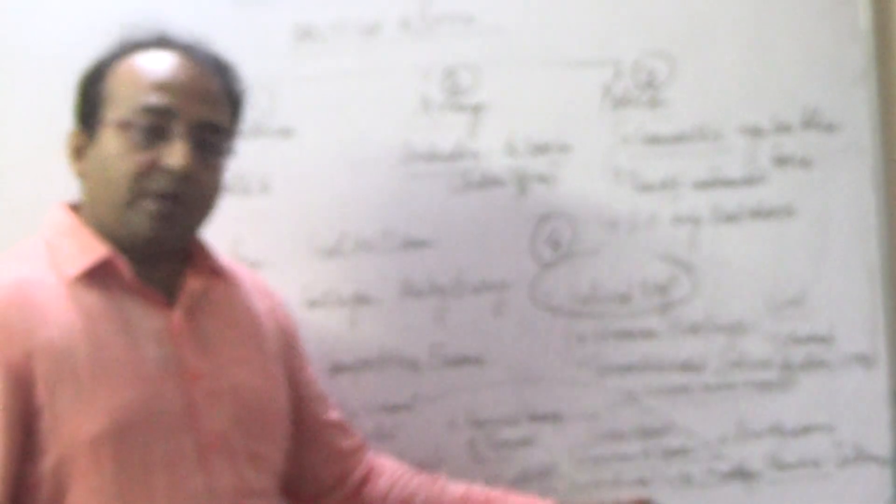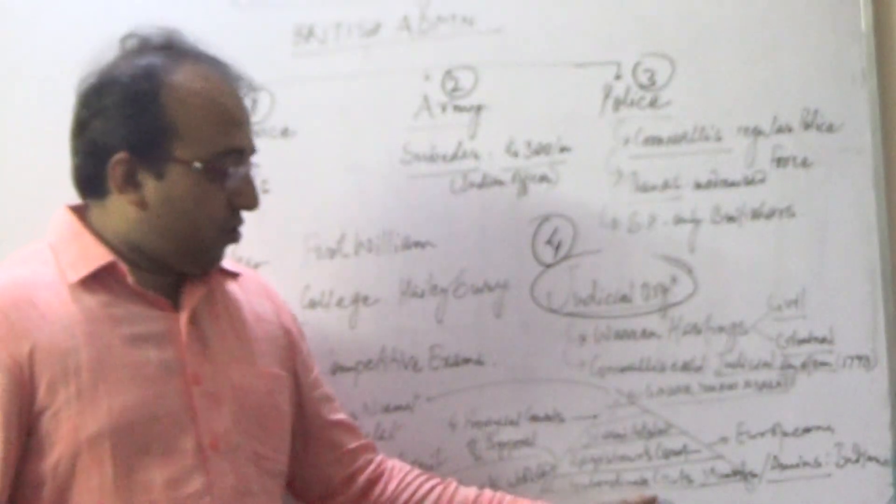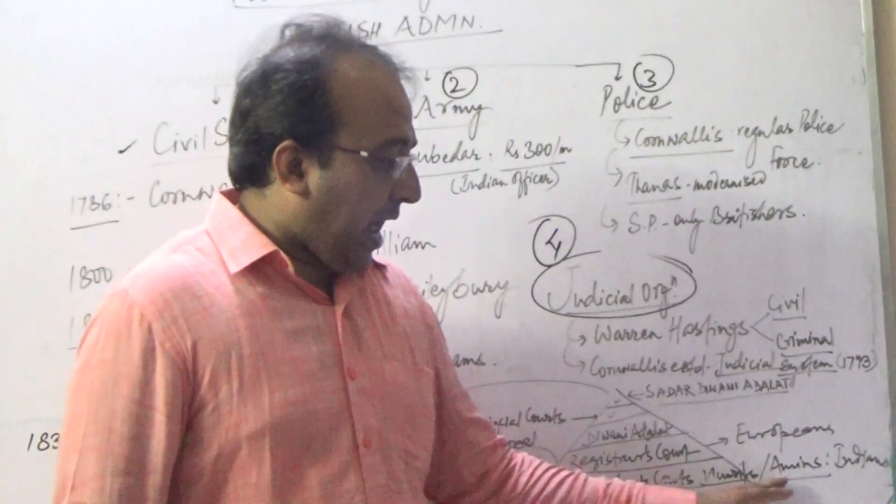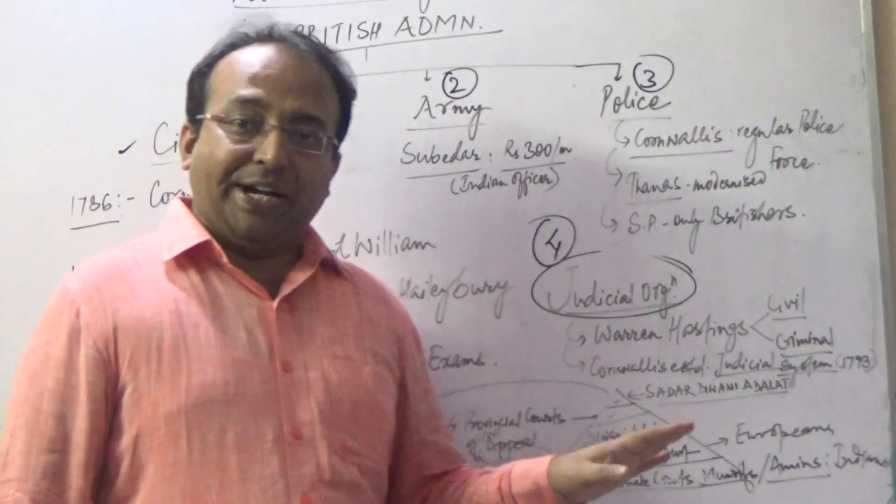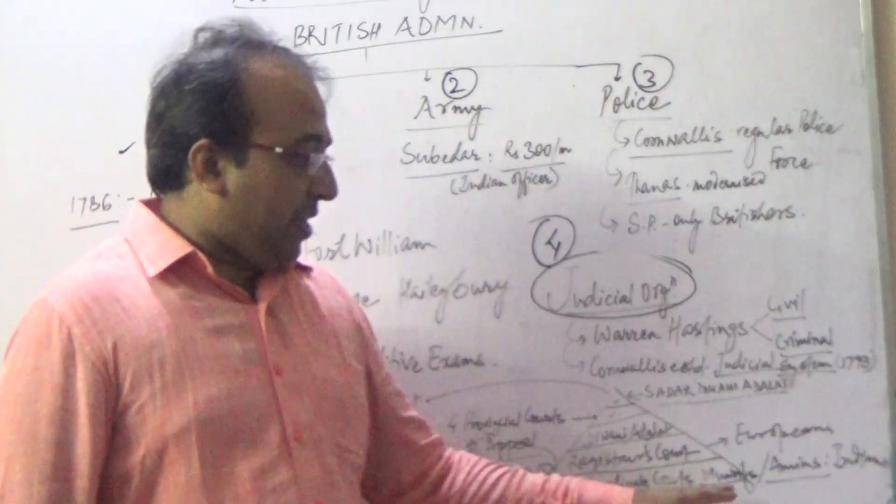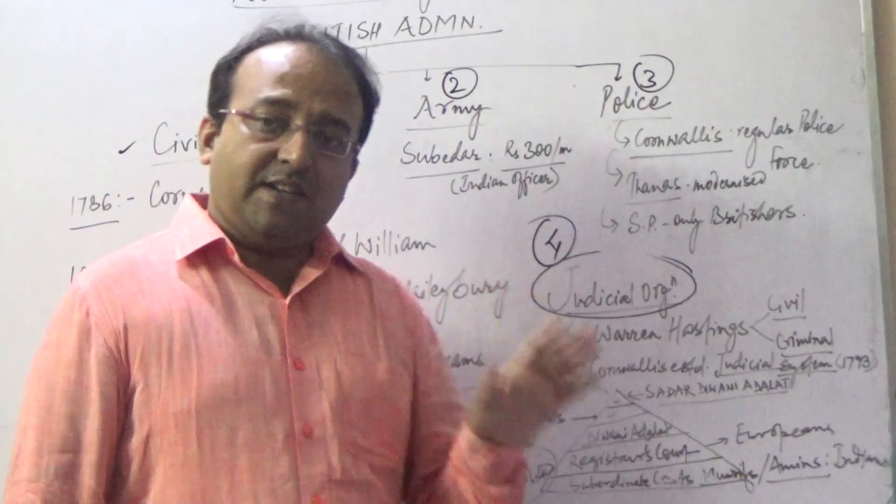The structure was the subordinate courts. Subordinate courts were the munsifs and amiens. They used to operate, so munsif and amiens used to operate.